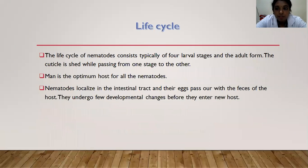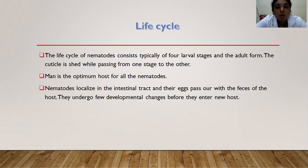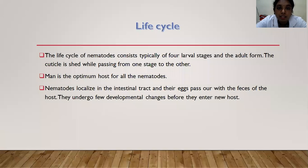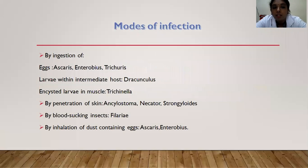The life cycle of nematodes consists typically of four larval stages and the adult form. The cuticle is shed while passing from one stage to the other. Man is the optimum host for all the nematodes. Nematodes localize in the intestinal tract and their eggs pass out with the faeces of the host, undergoing few developmental changes before entering the new host. Modes of infection include: by ingestion of eggs, found in Ascaris, Enterobius, and Trichuris.